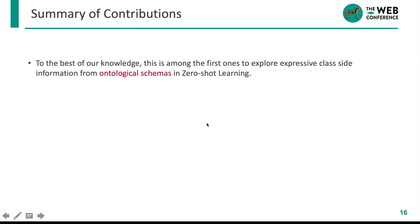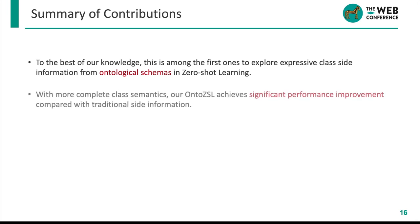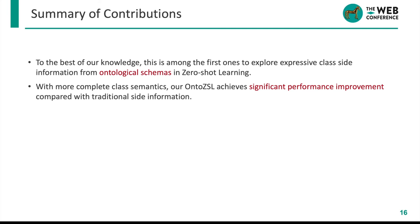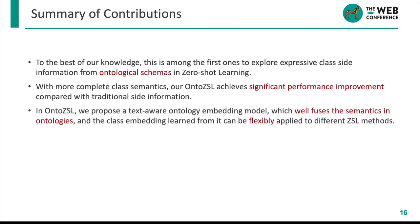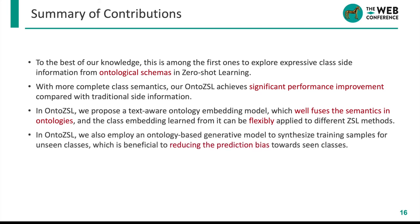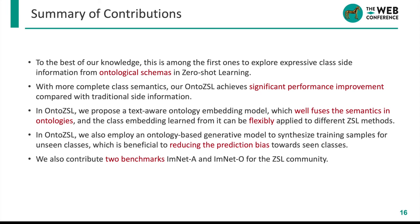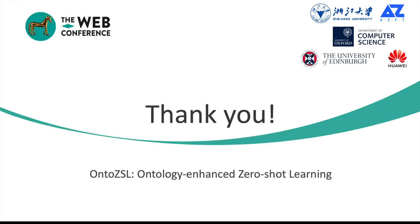To the best of our knowledge, this is among the first works to explore expressive class side information from ontological schemas in zero-shot learning. With more complete class semantics, our onto-ZSL achieves significant performance improvement compared with traditional side information. We propose a text-aware ontology embedding model which enriches the semantics in ontologies, and the class embeddings learned from it can be flexibly applied to different ZSL methods. We also employ an ontology-based generative model to synthesize training samples for unseen classes, reducing prediction bias towards seen classes. Finally, we contribute two benchmarks for the ZSL community. Thanks for listening — if you wish to learn more, please read our paper or talk with us at the conference.